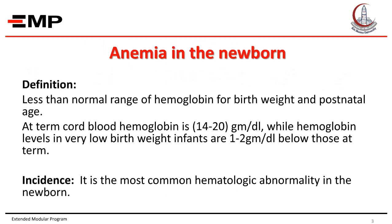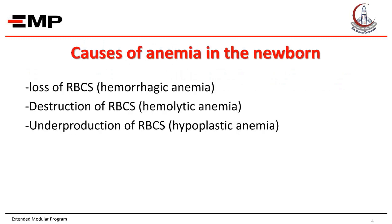Anemia in the newborn is defined by less than normal range of hemoglobin for birth weight and postnatal age. At term, cord blood hemoglobin is between 14 and 20 grams per deciliter, while hemoglobin levels in very low birth weight infants are 1 to 2 grams per deciliter below those at term. It is the most common hematologic abnormality in the newborn.